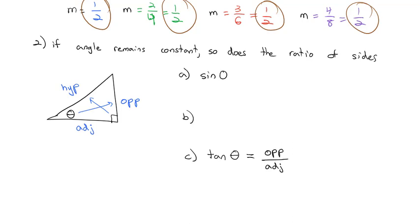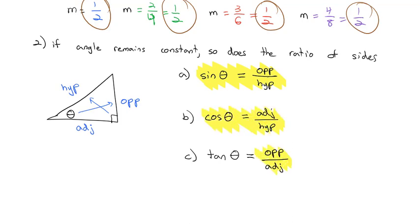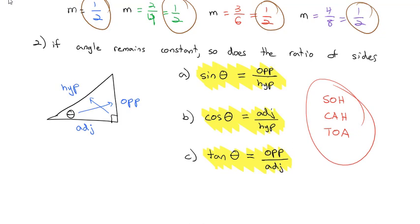The other two ratios are the sine and the cosine of the angle. The sine is calculated by taking the opposite side and dividing by the hypotenuse. The cosine is found by taking the adjacent side and dividing by the hypotenuse. You need to know each of these three ratios quickly off the top of your head, so you need to memorize them. Sine is opposite over hypotenuse. Cosine is adjacent over hypotenuse. Tangent is opposite over adjacent.